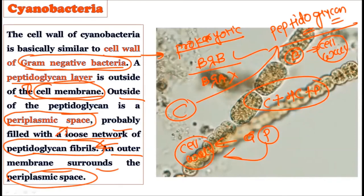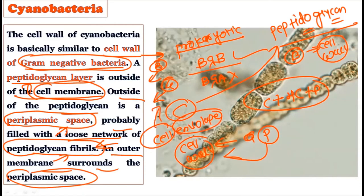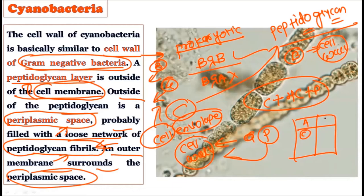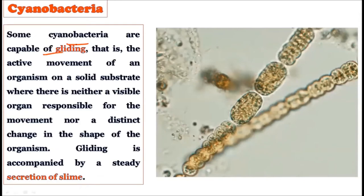This is why we say cyanobacteria are more closely related to prokaryotic bacteria than to eukaryotic algae. The cell wall characteristics — the presence of peptidoglycan — is the key justification. In algae, we write chlorophyll; in bacteria, we write peptidoglycan in the cell wall.